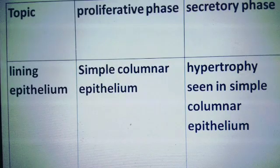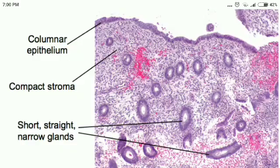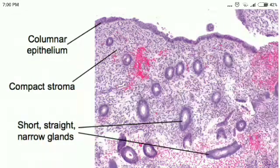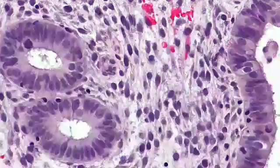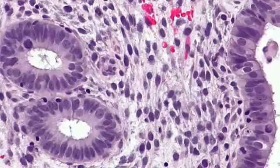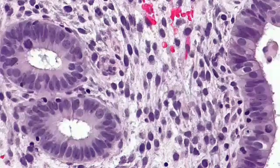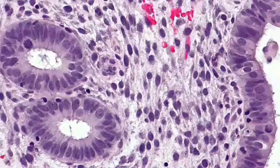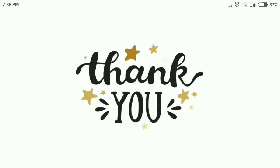Regarding the lining epithelium: in the proliferative phase it is simple columnar epithelium, while in the secretory phase hypertrophy is seen in the simple columnar epithelium. This image shows the proliferative phase with only simple columnar epithelium and no hypertrophy. Here also there is simple columnar epithelium visible.